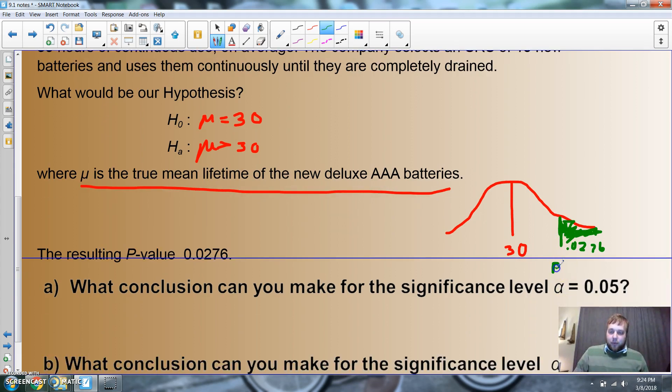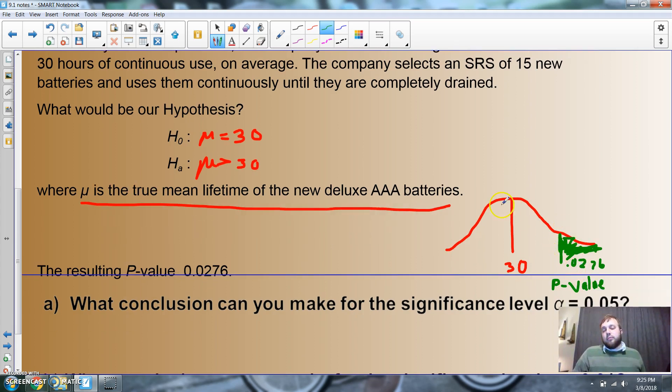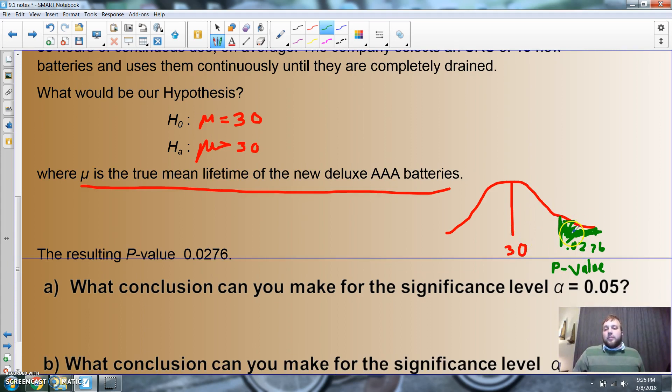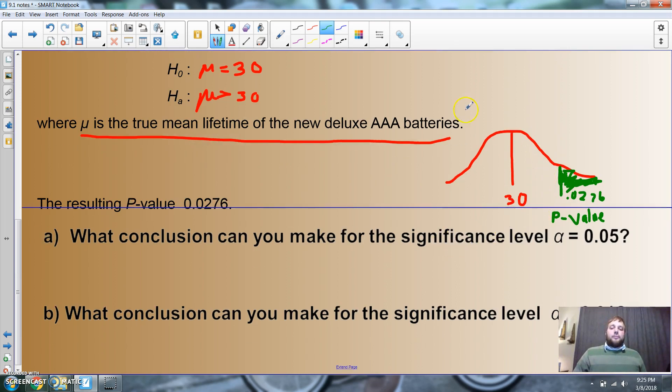This would be my p-value - the percentage, really it's my z-score, guys. Now is this enough information? Is this far enough removed from 30 to say it's almost impossible to get this result from 30? So these new batteries have to be better, right? If there's only two percent chance of this event happening if the average truly was 30, it's got to be better.